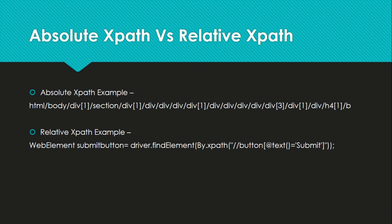The disadvantage of absolute XPath is that if there is any change in the tree structure — such as a new element added in between — the XPath will break. Relative XPath, which is what we have been writing so far, starts with double slash and is relative to a particular tag. There are far fewer chances of failure, so it is always better to write a relative XPath.